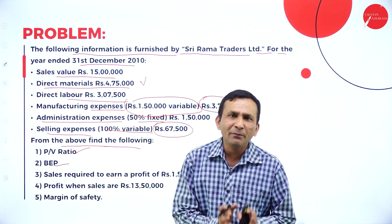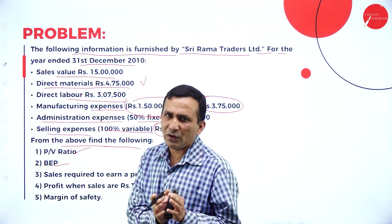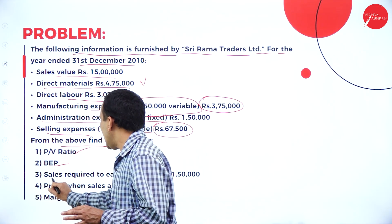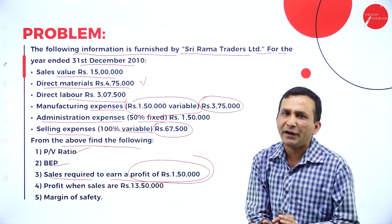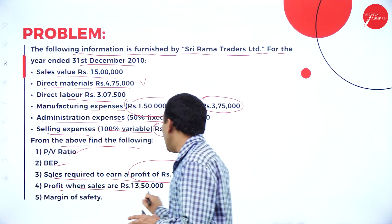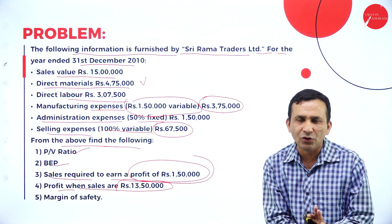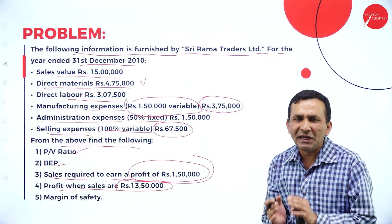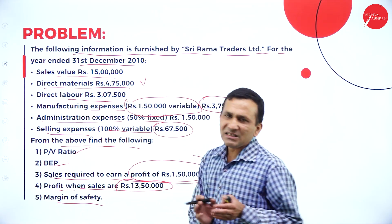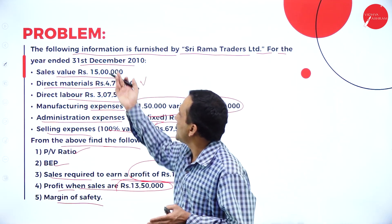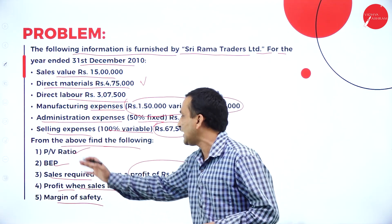From the above information, we need to find: (1) PV ratio using the formula contribution divided by sales into 100; (2) BEP in units as well as sales value; (3) sales required to earn a desired profit; and (4) profit when sales is 13 lakh 50,000, where we calculate 13 lakh 50,000 into PV ratio and subtract fixed cost; and (5) margin of safety, using actual sales of 15 lakhs minus BEP in sales.